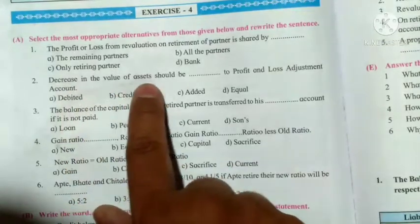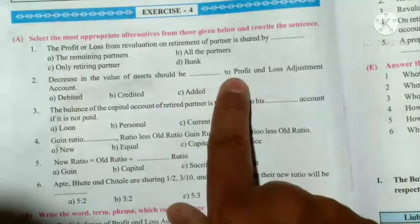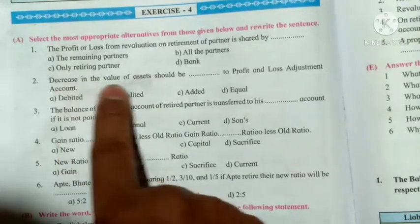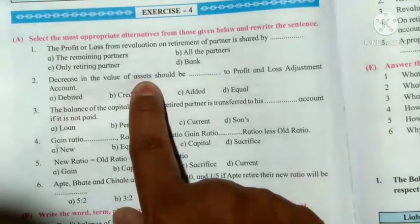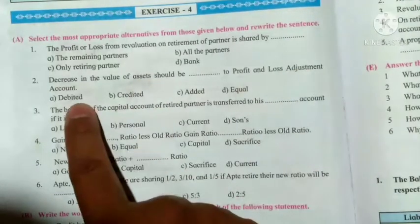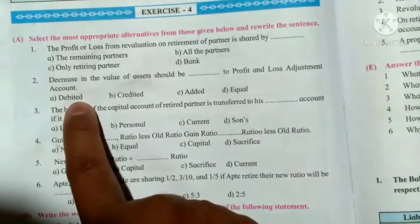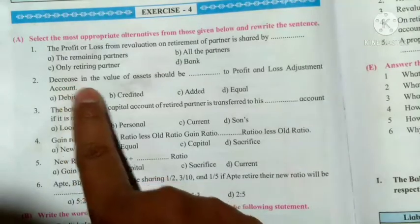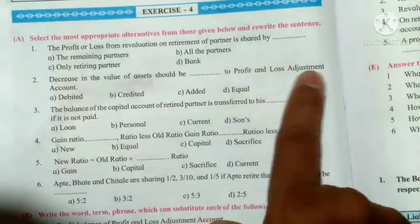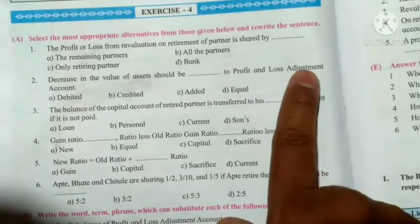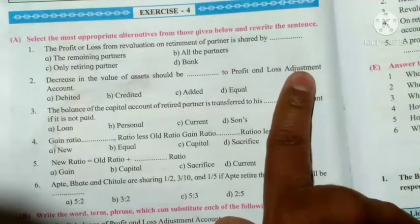Question 2: decrease in value of asset should be debited to profit and loss adjustment account. Decrease in value of asset means loss, and loss is indicated on the debit side of the profit and loss adjustment account. Therefore, the answer is debited. Decrease in the value of asset should be debited to profit and loss adjustment account.